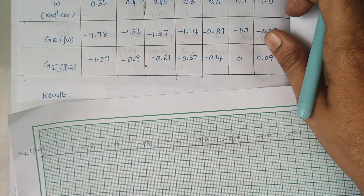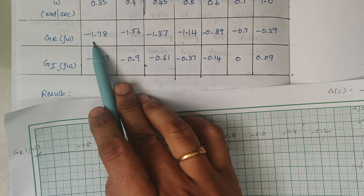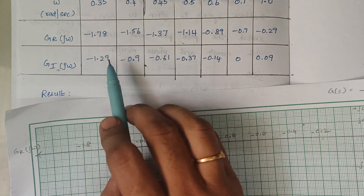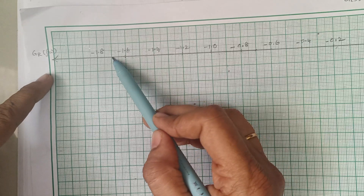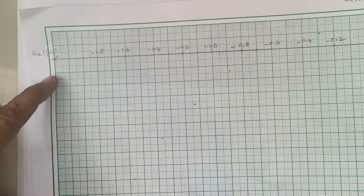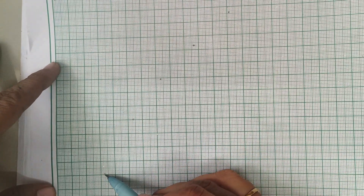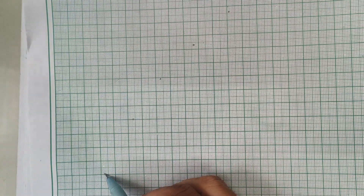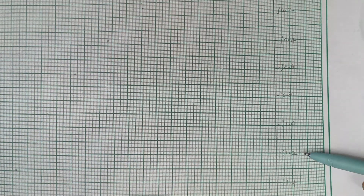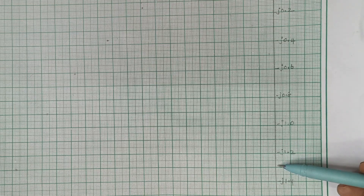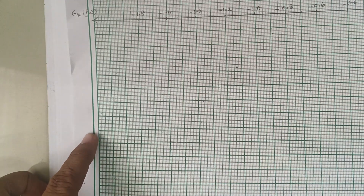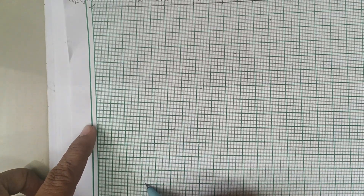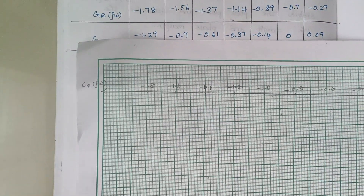The first value has a real part of minus 1.78 and an imaginary part of minus 1.29. On the graph sheet, 1.78 lies between 1.6 and 1.7, so it is somewhere around there. At the same time, minus 1.29 on the imaginary axis is around minus 1.2. Taking a scale and moving to intersect those coordinates, here lies our first point — real term minus 1.78, imaginary term minus 1.29.